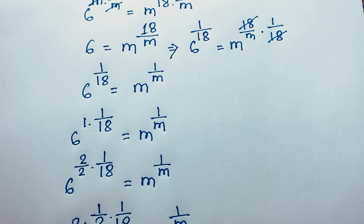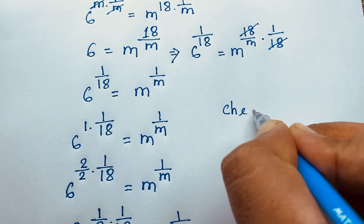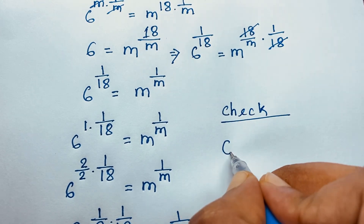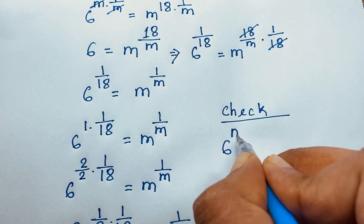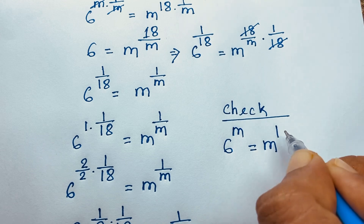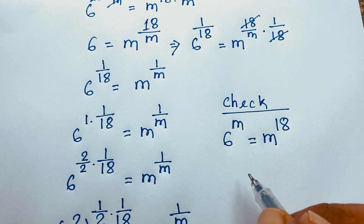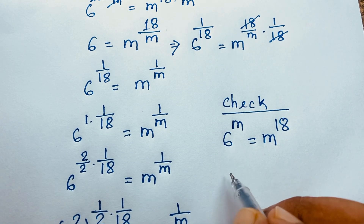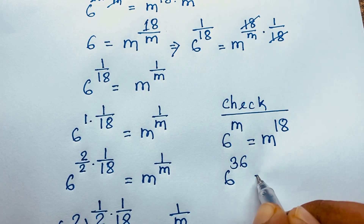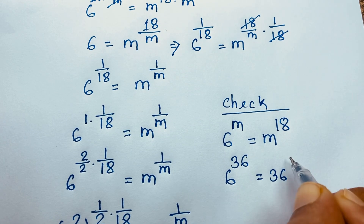Let's verify. Let's check out. Our question is 6 to the power m is equal to m to the power 18. We found m is equal to 36. So substituting: 6 to the power 36 is equal to 36 to the power 18.